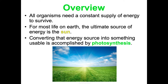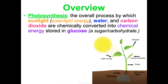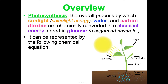So how does it get converted into a usable source? That is done through a process called photosynthesis that plants do. This is the overall process by which sunlight or solar light energy, water, and carbon dioxide are going to be chemically converted — so we're doing a chemical reaction here — into chemical energy stored in glucose, which is a sugar or carbohydrate. If you remember from physical science when we talked about energy conversions, this is a light energy to chemical energy conversion happening in this chemical reaction.